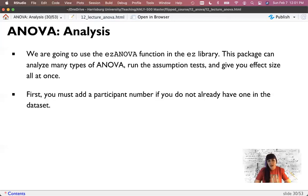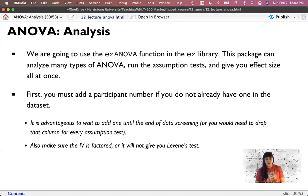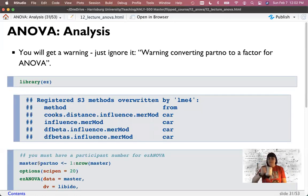So let's look at how EZ works. The key thing in EZ is that we have to add a participant number if we don't already have one in the data set. That's more critical for repeated measures ANOVA, which we're not going to do today, but it requires it for all of them. And the simplest thing to do is just add a count variable, like count up one to the number of rows. But it's easier if you do that at the end of data screening. Also, make sure your IV is factored, or it won't give you Levene's for whatever reason.